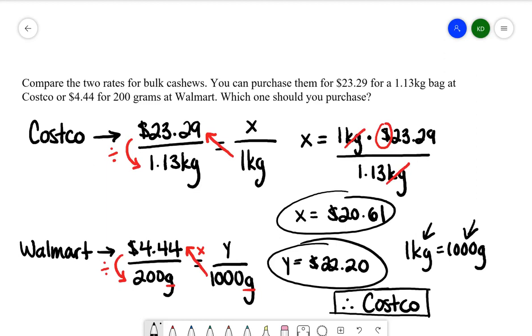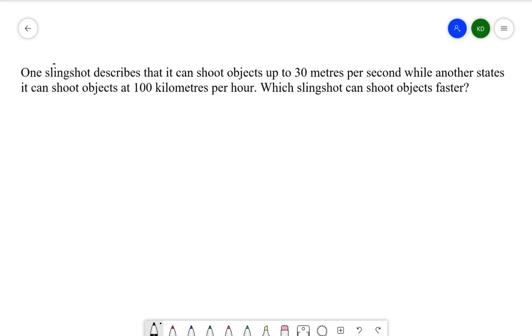Let's try one more example. One slingshot describes that it could shoot objects up to 30 meters per second, while another states it can shoot objects at 100 kilometers per hour. Which slingshot can shoot objects faster?